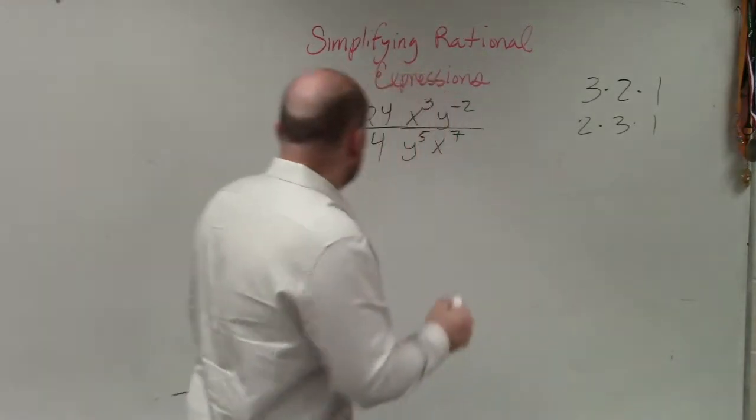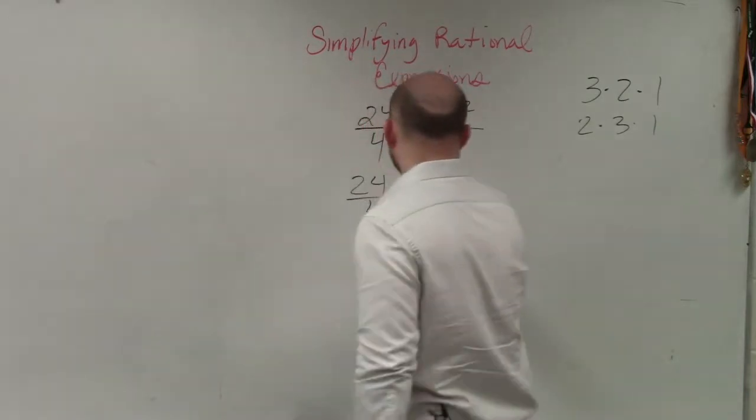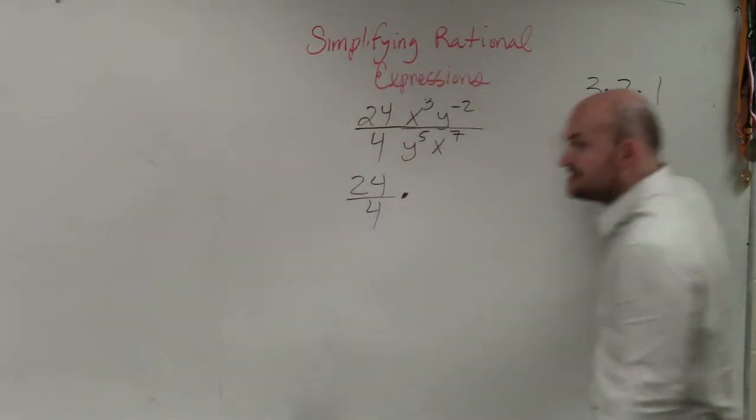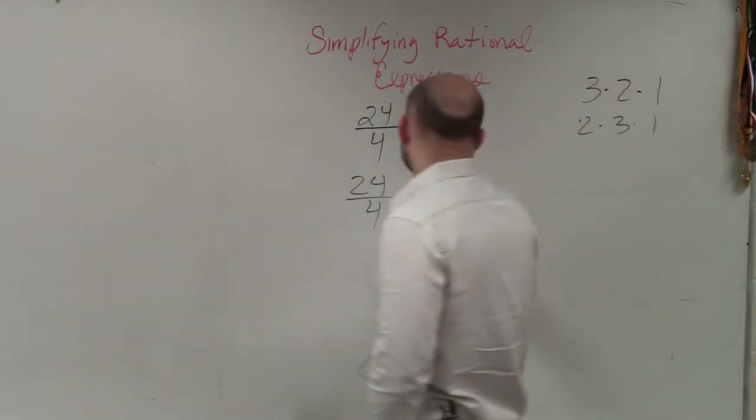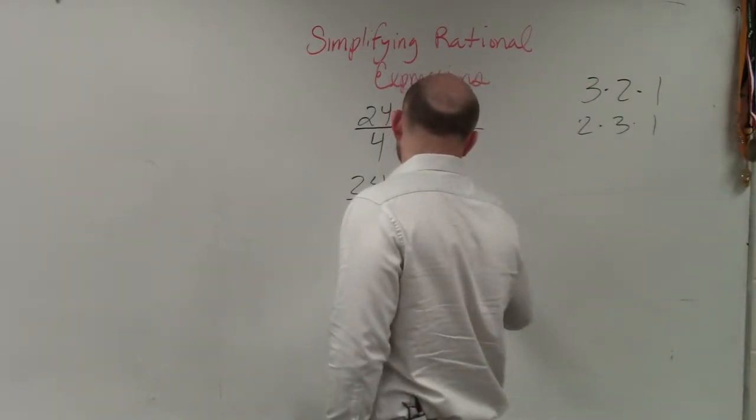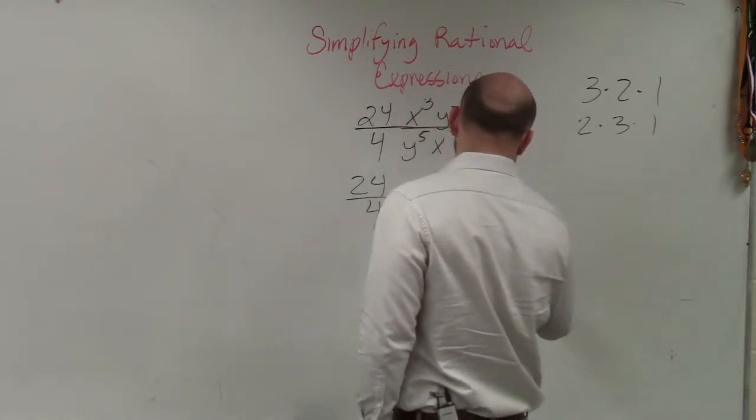the main important thing I'd like you guys to do is break this up into three problems. 24 over 4 times—again, guys, it doesn't matter if you rewrite this 3 times 2 times 1 or 2 times 3 times 1—you break this up into x cubed divided by x to the 7th times y to the negative 2nd divided by y to the 5th.